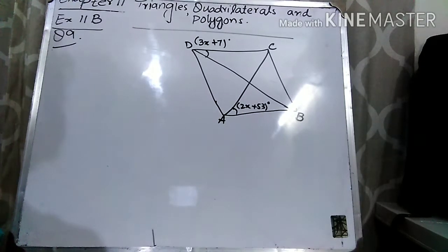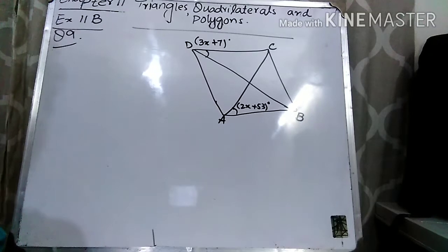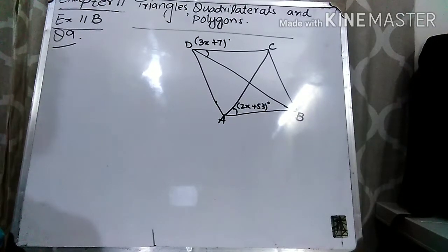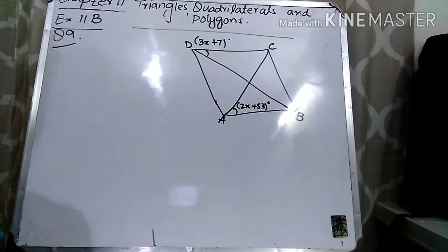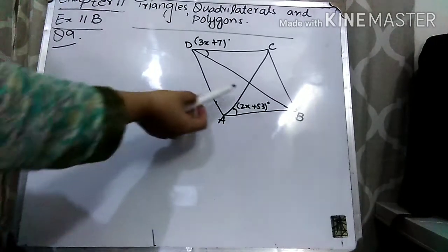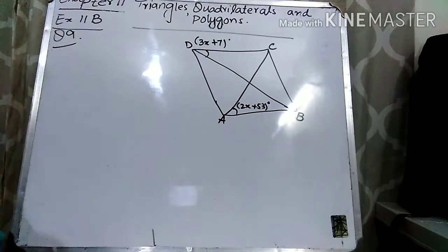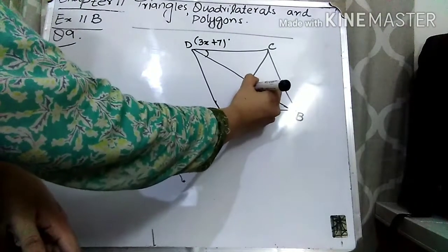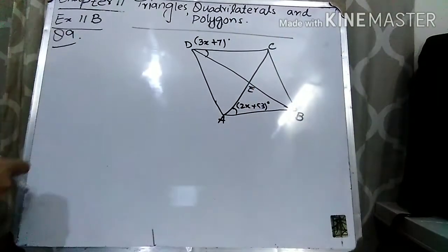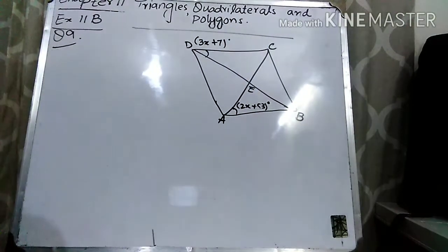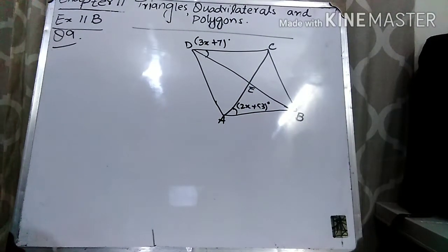Question number 9 is — your books must be open in front of you. Question number 9 is: the figure shows a rhombus A, B, C, D where the diagonals A, C and B, D intersected at E. Find the value of X. So here the rhombus is given and the two diagonals are DB and AC. ABCD is a rhombus. We can use the property of a rhombus to find out the value of X.